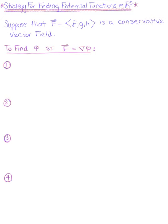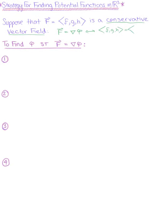Now that we've looked at an example of finding the potential function in R2, we need to establish a strategy for finding a potential function in R3. Suppose that vector f defined by components f, g, h is a conservative vector field. This means that vector f is equal to the gradient of phi, which is equivalent to saying that (f, g, h) equals the vector with components defined by the partial derivatives of phi with respect to x, y, and z.